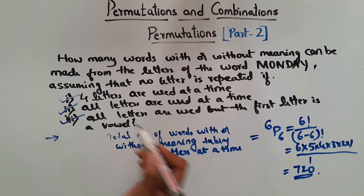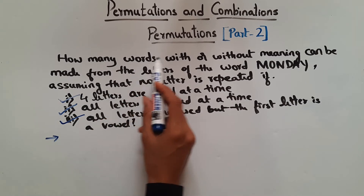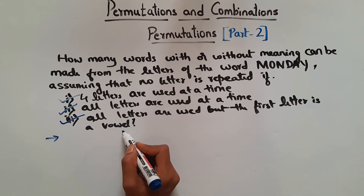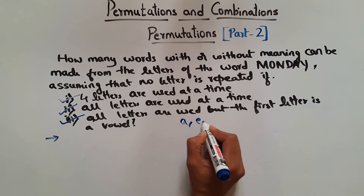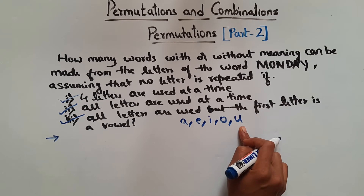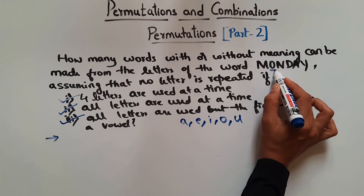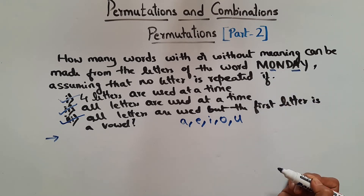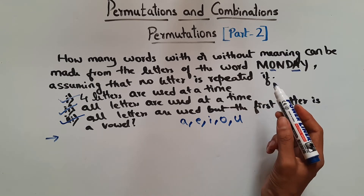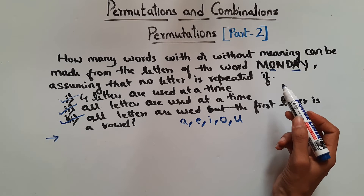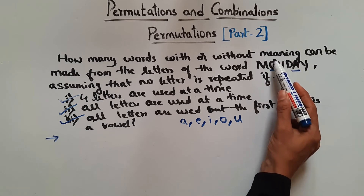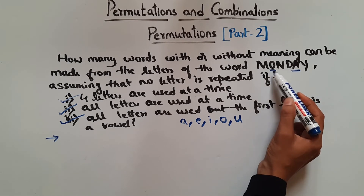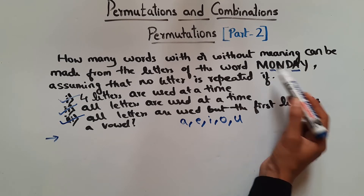Now let's see the last part. Here it says how many words with or without meaning you can make from the letters of the word MONDAY where all letters are used but the first letter is a vowel. Now what are vowels? We know A, E, I, O, U — these are vowels. So in MONDAY, how many vowels are there? We have O and we have A. So we have two vowels. So we have to see how many words you can make where those words should start with a vowel.